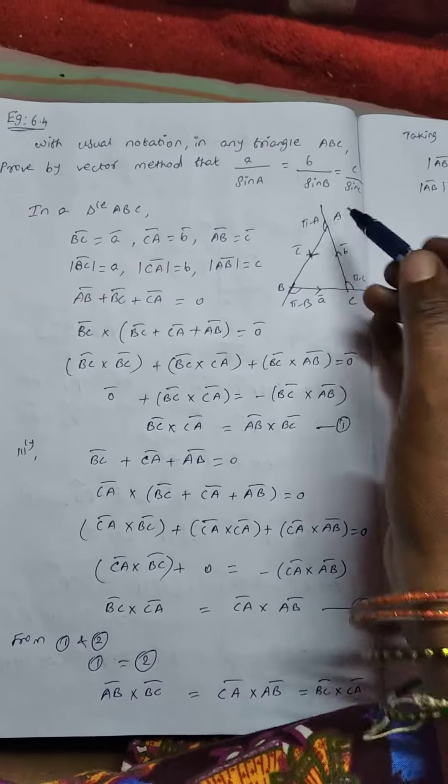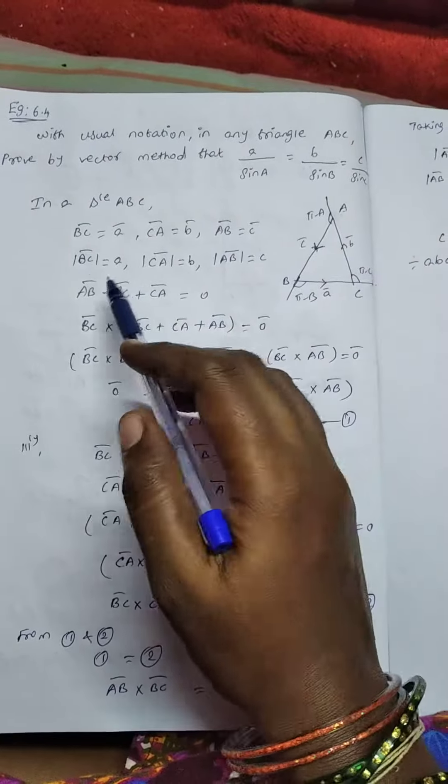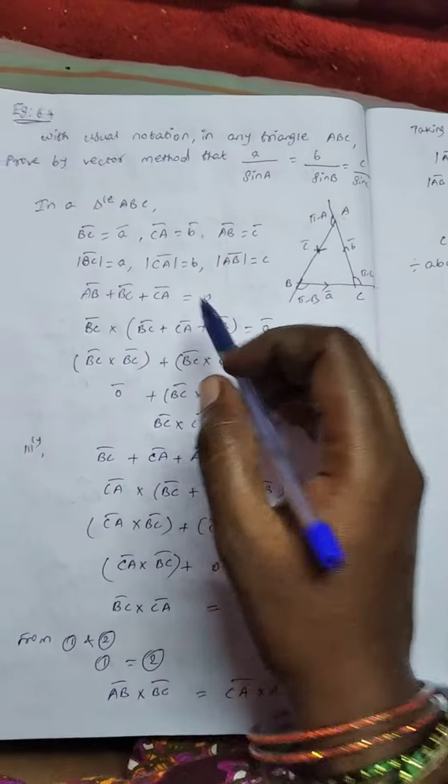In triangle ABC, BC vector equal to A vector, CA equal to B vector, AB equal to C vector. That's the modulus of vector. Now add 0.